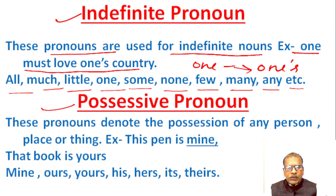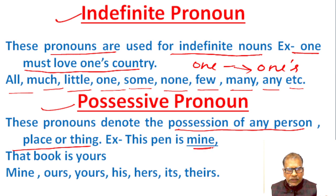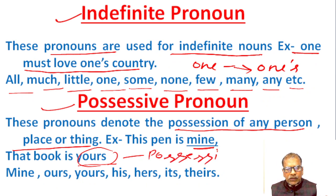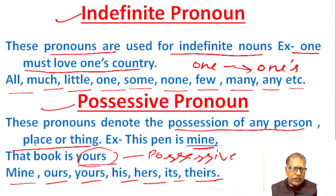Possessive pronouns. These pronouns denote the possession of any person, place or thing. Example: 'This pen is mine.' In this sentence, 'mine' is a possessive pronoun. 'That book is yours' — 'yours' is a possessive pronoun. Possessive pronouns include: mine, ours, yours, his, hers, its, theirs. These pronouns are used in possessive form.